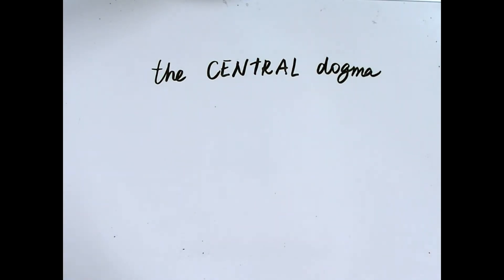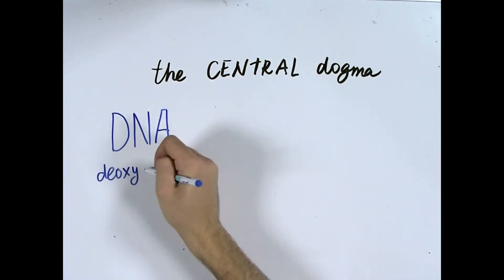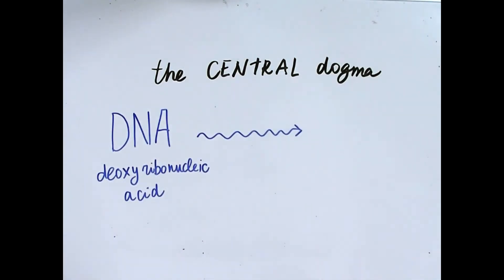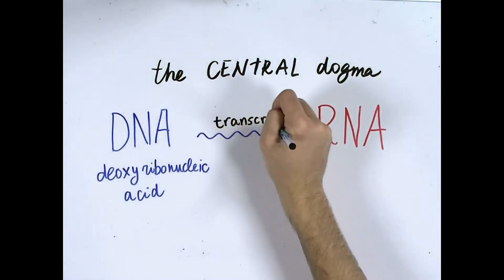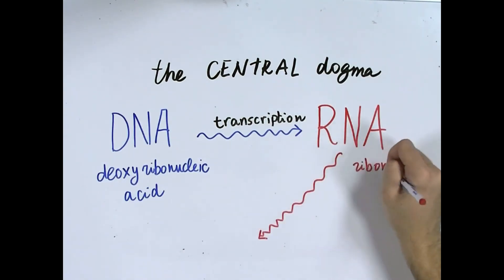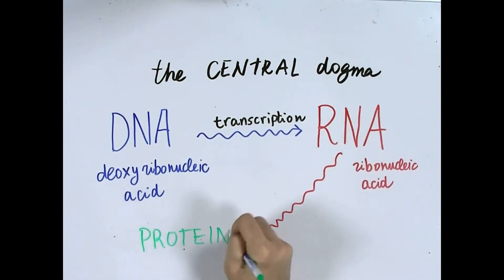In the central dogma, deoxyribonucleic acid, or DNA, is converted to ribonucleic acid, or RNA, by a process called transcription. That RNA is then converted to proteins by a process called translation.